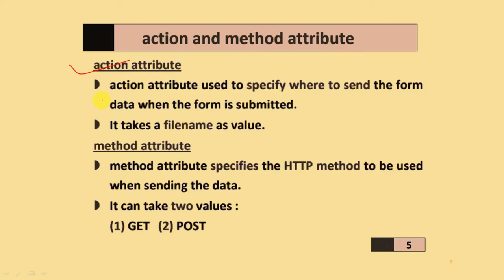The action attribute is used to specify where to send the form data when the form is submitted. It takes the file name as a value. The method attribute specifies the HTTP (Hypertext Transfer Protocol) method used when sending the data.